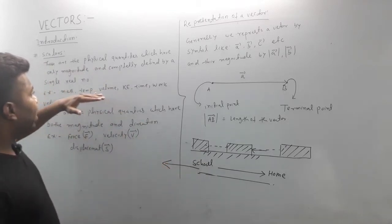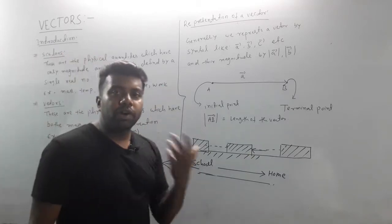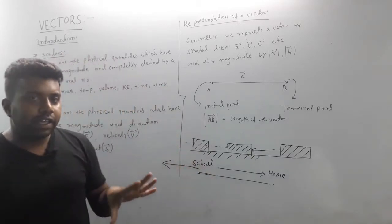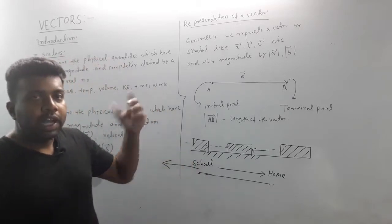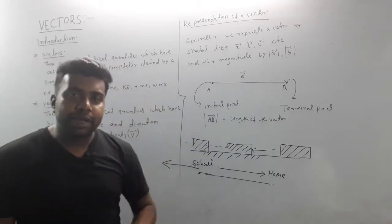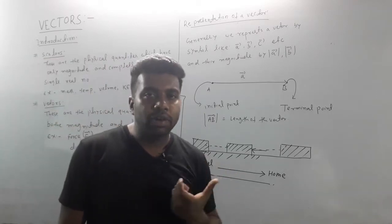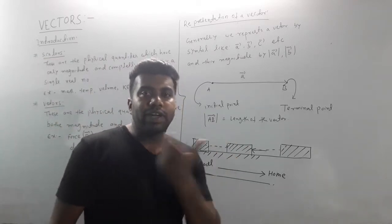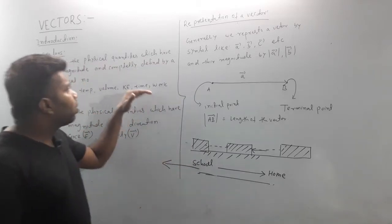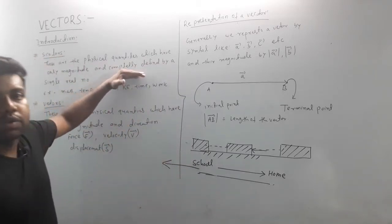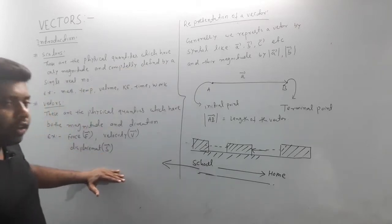Temperature, mass, kinetic energy, time, work — all of them are directionless, so they are scalar quantities. For example, time is the same whether you look north or right — the same time applies. But a quantity that depends on direction is your vector quantity.